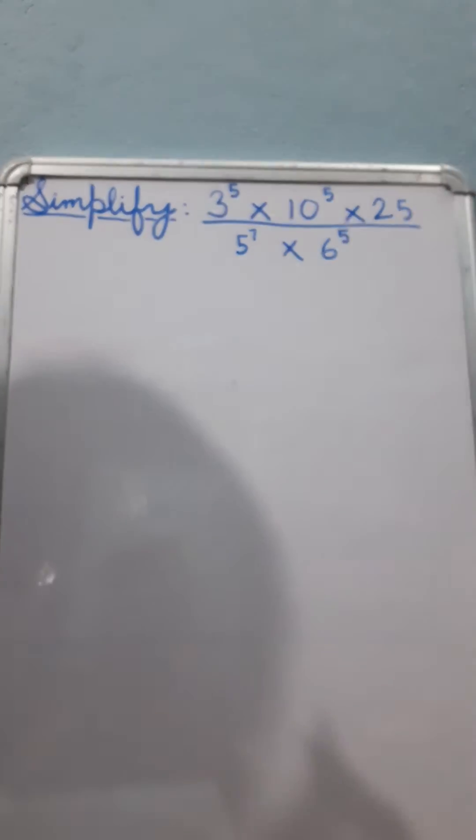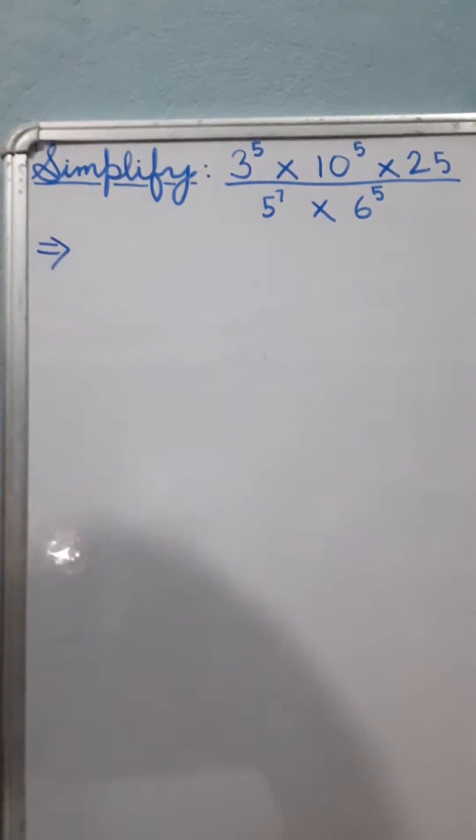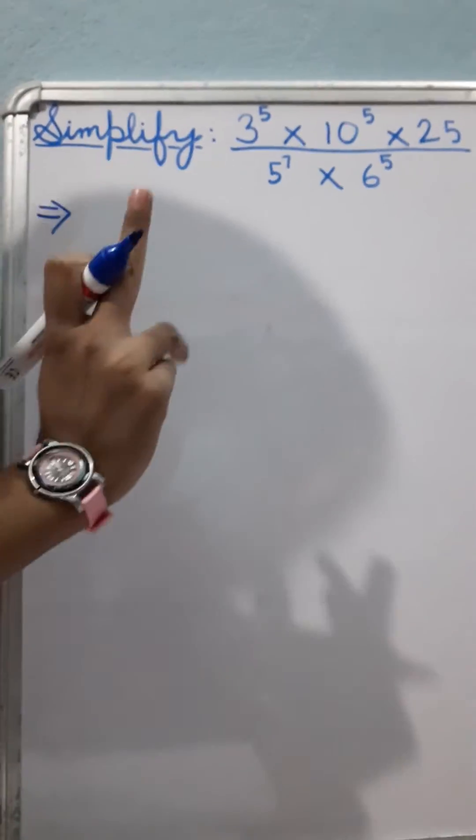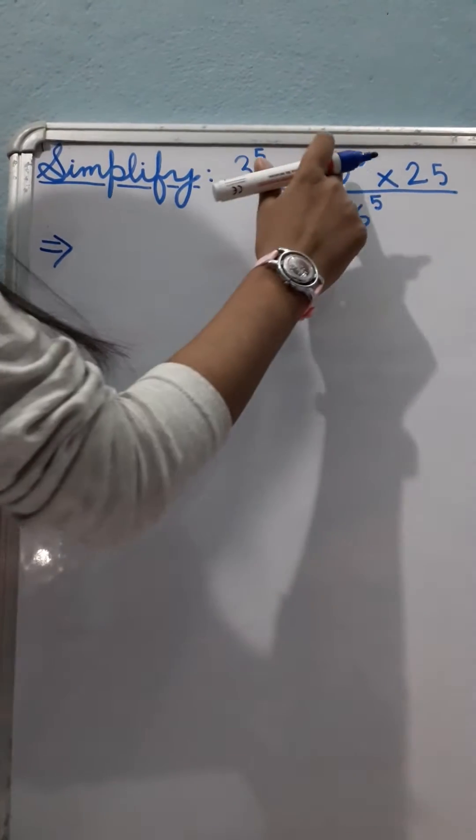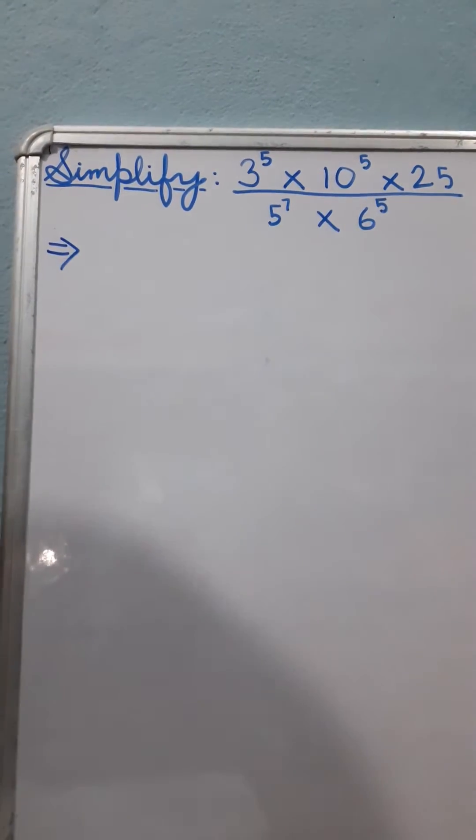So let's simplify it. The first process, we will break these two. As you are seeing, not only these two - this is not breakable, this is not breakable. But these three are breakable. We can break this.